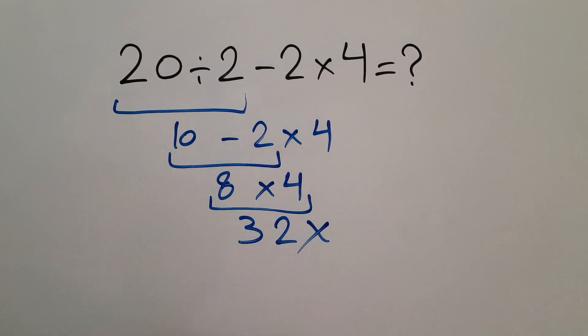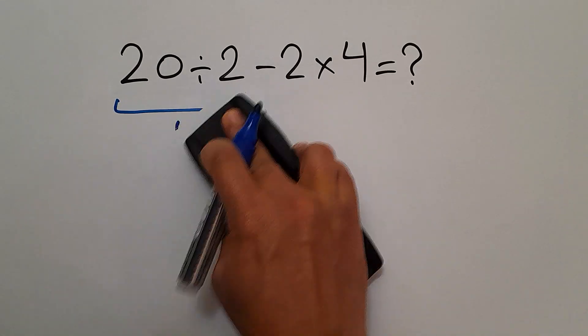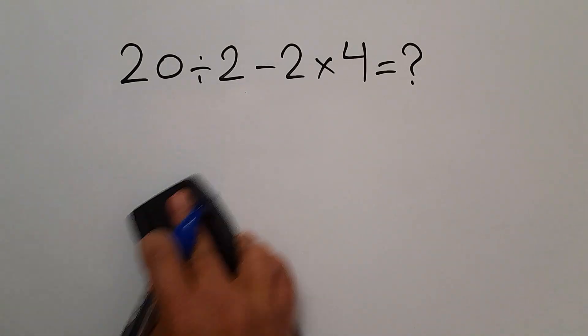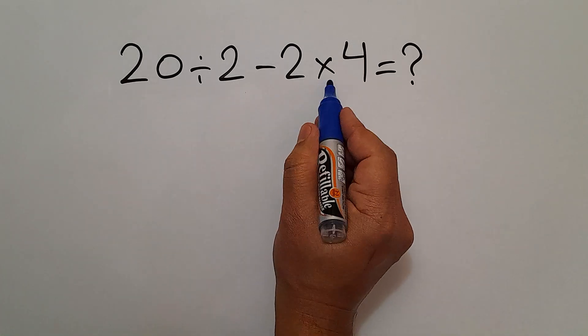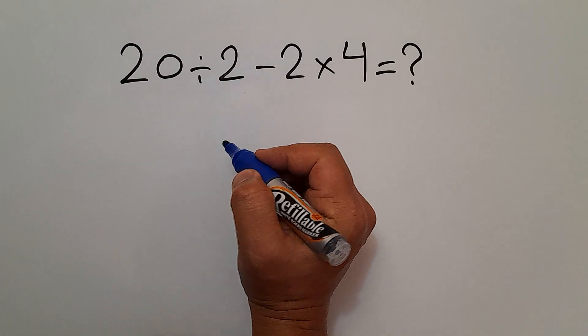But this answer is not correct. Because according to the order of operations, multiplication and division have higher priority than addition and subtraction.